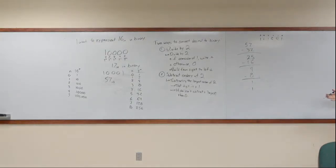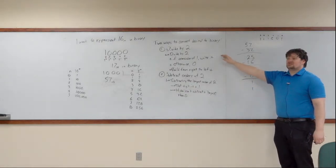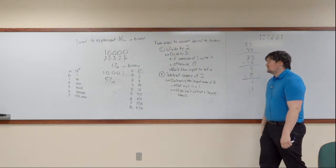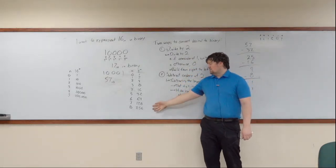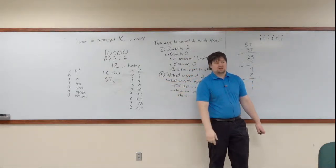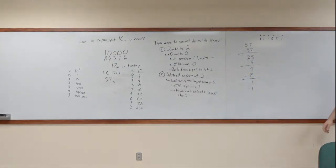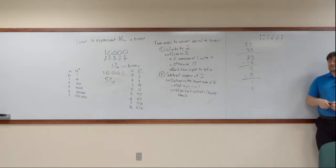So you pick your poison — whichever method you prefer. A lot of people prefer the divide-by-2 because you can plug that in your calculator and just continuously hit divide by 2. Some people prefer the subtraction method because if you have a table of these numbers, it's just compare: is it bigger than this one, smaller than this one — write that value of n. I don't care how you do it; these are the two ways I've presented. There are probably other ways that exist. If you want to use one of those methods, that's fine too.